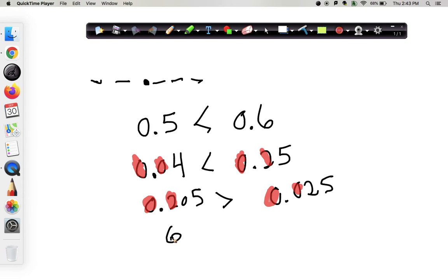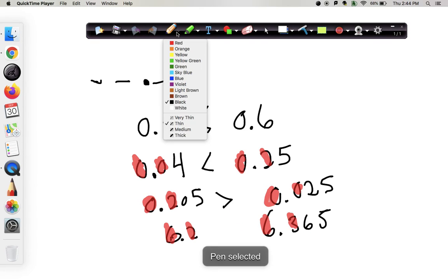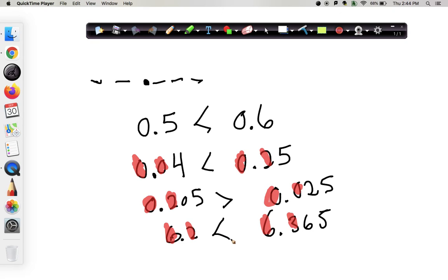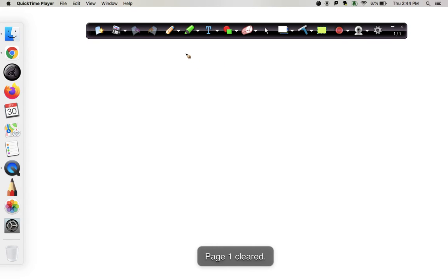We can even compare 6.2 to 6.365 thousandths. Even if they have different place values, we are still going to do the same process where we're just going to look at the tenths. Those are the ones, those are tied. Tenths, 3 compared to 2. We're done. We don't have to look at the rest of it. 6.2 is less than 6.365 thousandths.